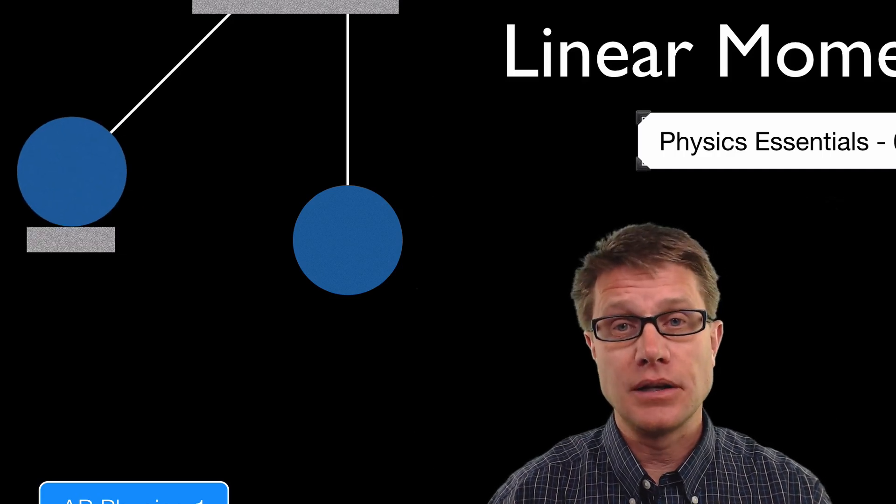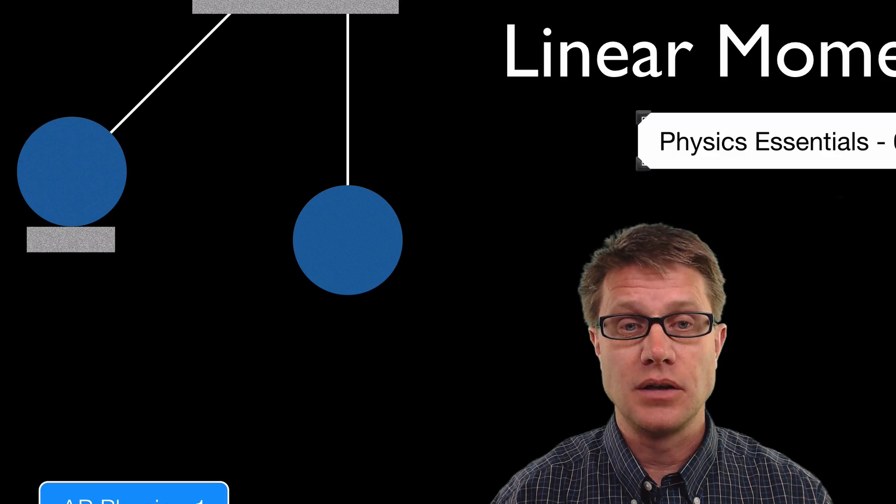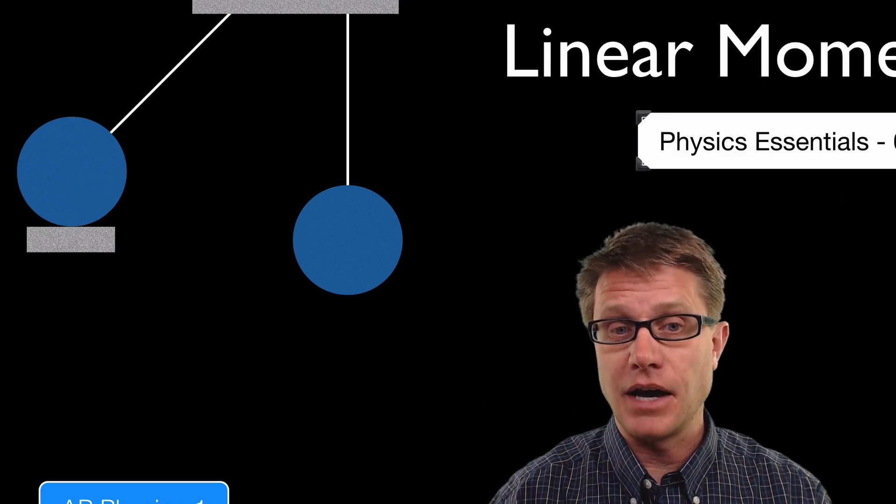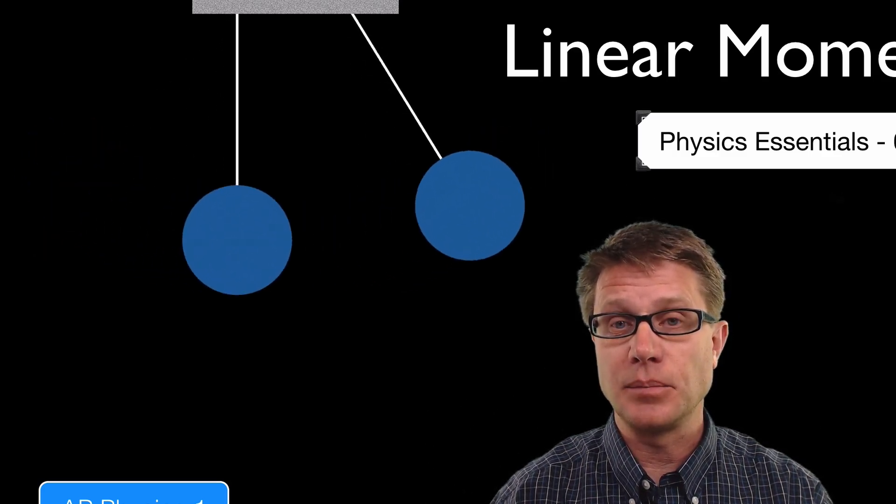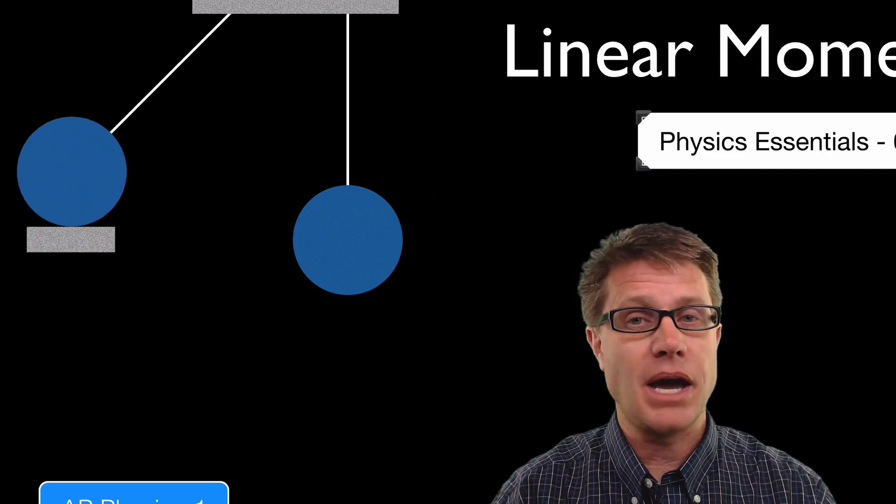And it bounces off the other sphere and then it comes back again. And so is linear momentum conserved? Yes. It is always conserved in every collision. I have momentum on the left side. I am transferring that to the right side and then it is simply coming back again. And this only works if they both have the same exact mass.